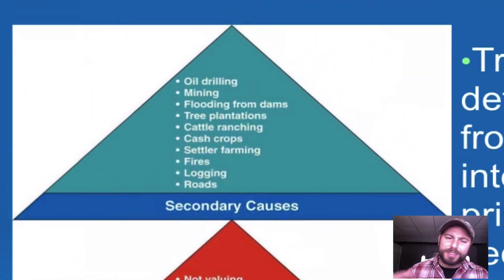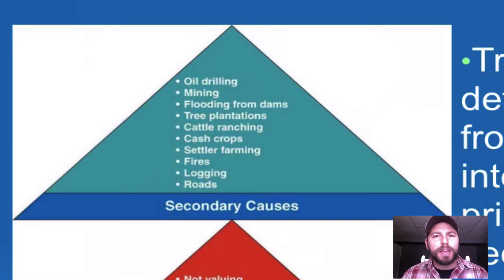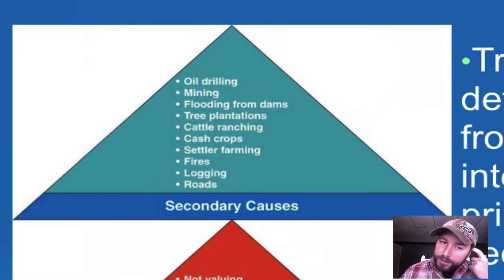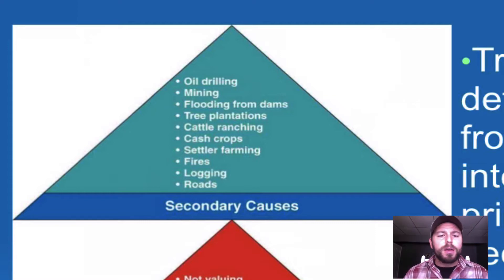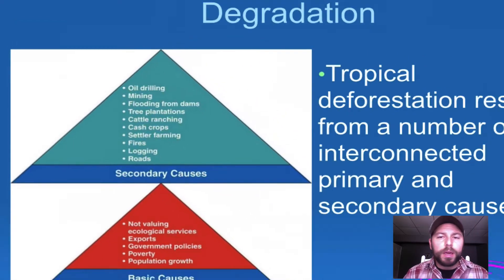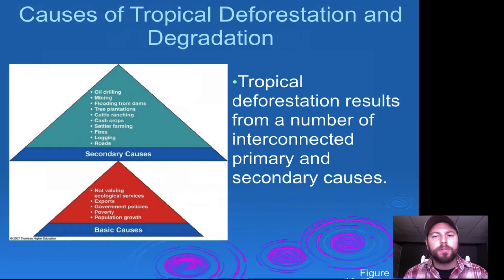As a result, we see oil drilling, mining, flooding for dams — which floods upstream areas for reservoirs — tree plantations, and cash crops. Any number of these things are ways that our tropical forests are getting degraded.